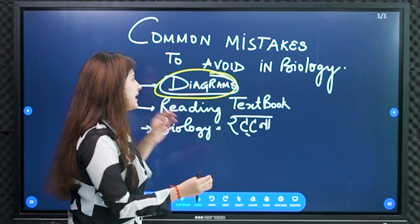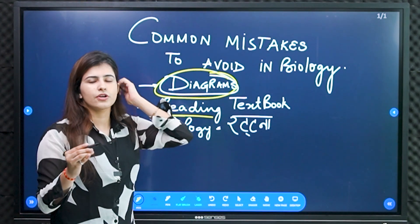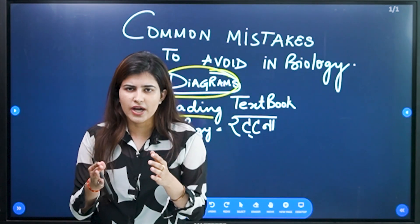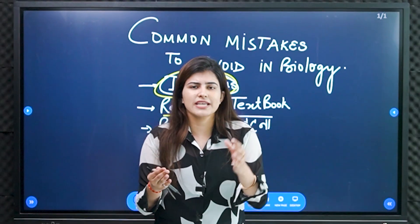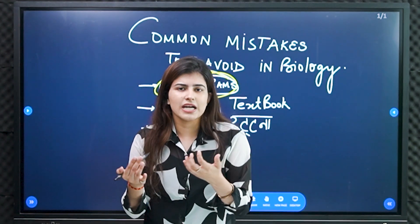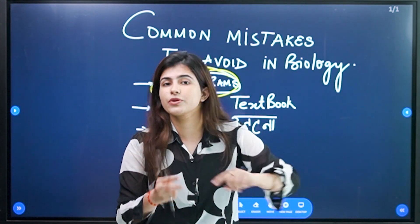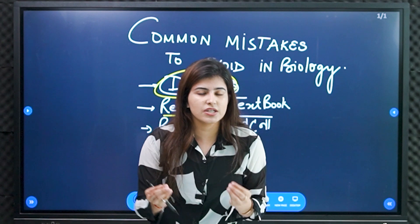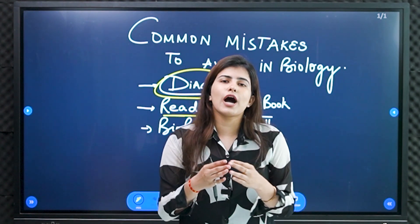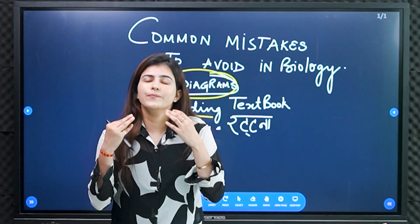Another point is about reading textbooks. What do you do? You mug up things. You read from your copy and don't pick up textbooks because you already have long answers in your brain. But what will you do about MCQs? MCQs will not come from your copy — they come from the books. By skipping the textbook you leave a loophole and lose marks.